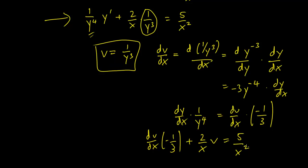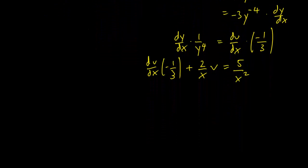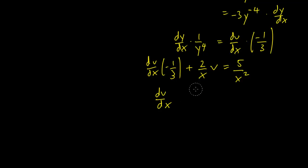Let's multiply everything by minus 3 to make things slightly easier. So dv/dx minus 6 over x times v equals minus 15 over x squared.